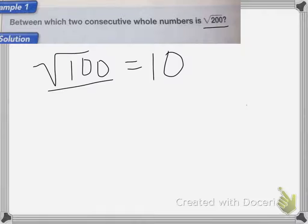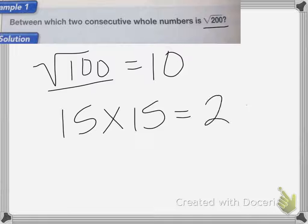So we might try 15. 15 times 15 is equal to 225, which is also too large, but it's really close to 200.